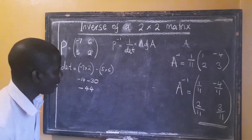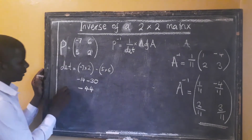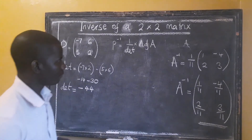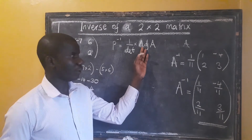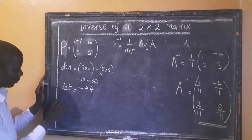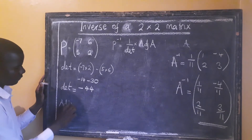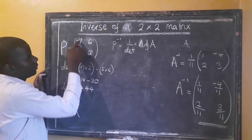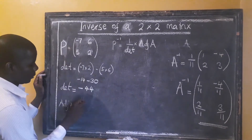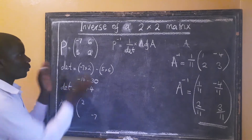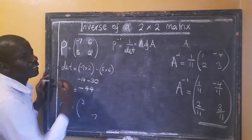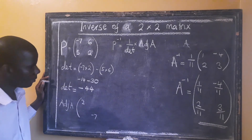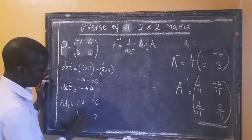Negative 44 is going to be our determinant. Now let's come to the adjoint. For the adjoint, the elements in the major diagonal switch their positions: the 2 comes here and the negative 7 goes here — it carries its own sign. For the elements in the minor diagonal, they change their signs. Since these are both positives, both will become negatives. So we get negative 6 and negative 5.